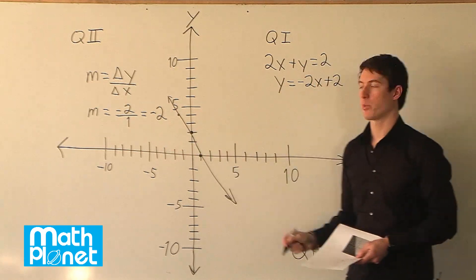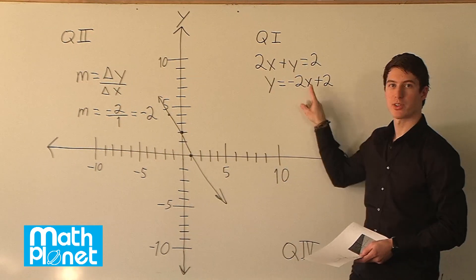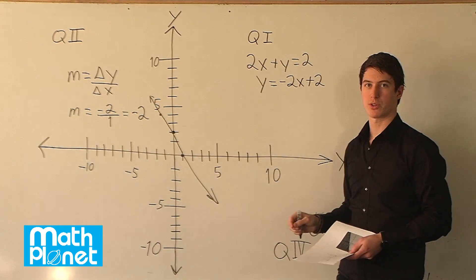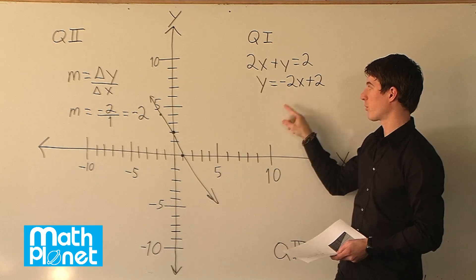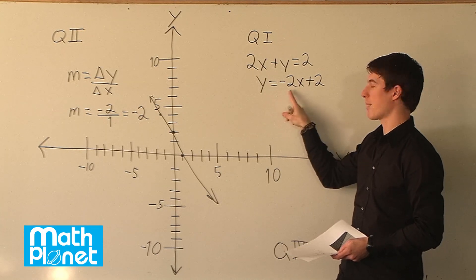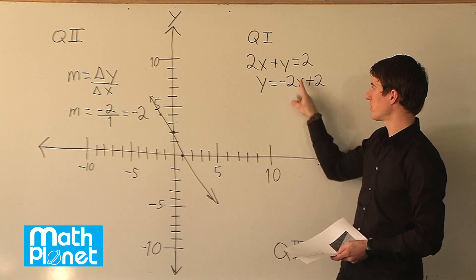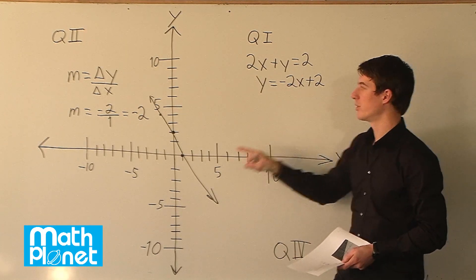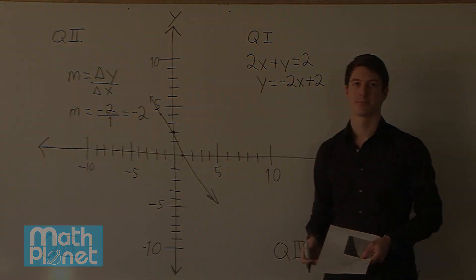This is exactly what we would have seen if we looked at the slope-intercept form of our original equation, written as y equals mx plus c. m is equal to negative 2, which is exactly what we found here.